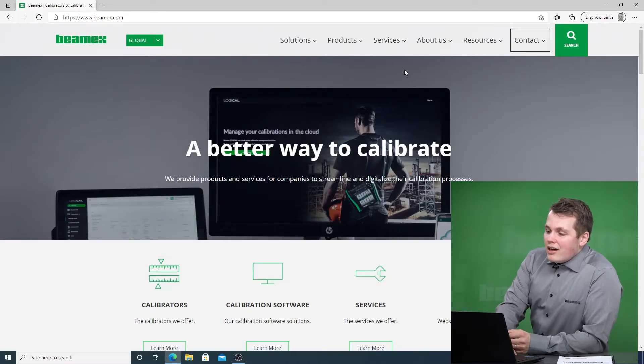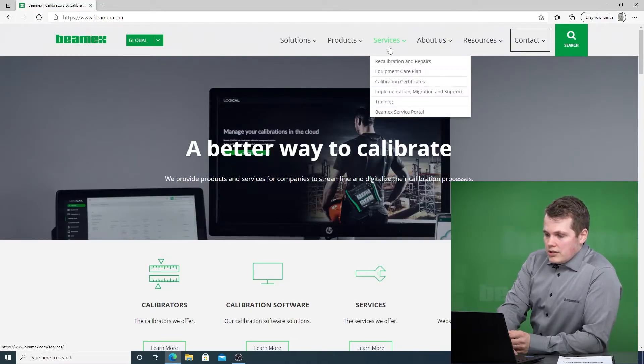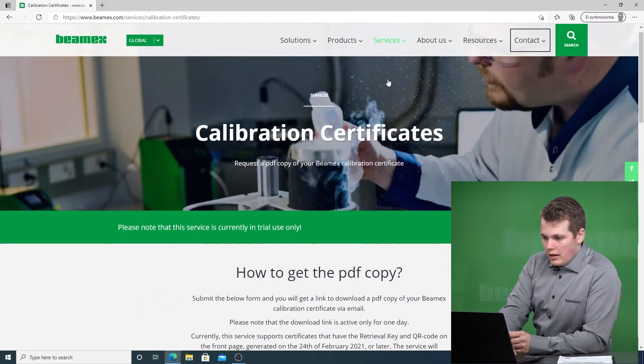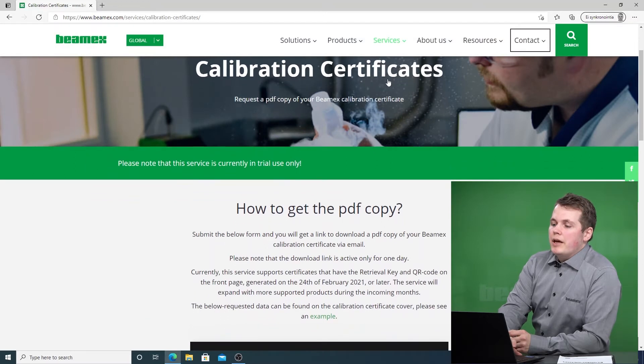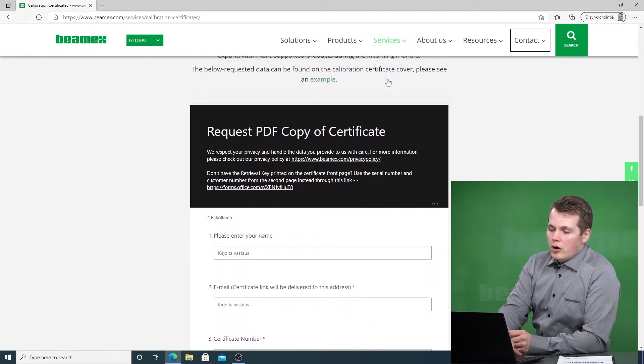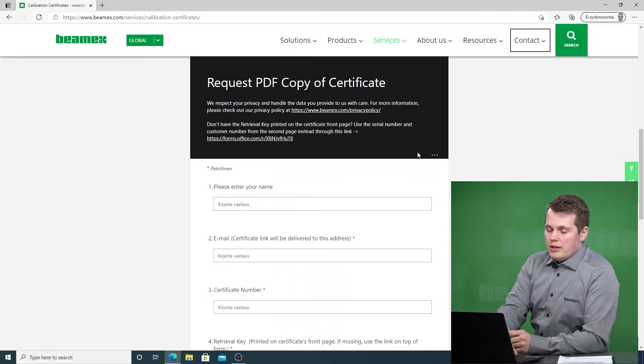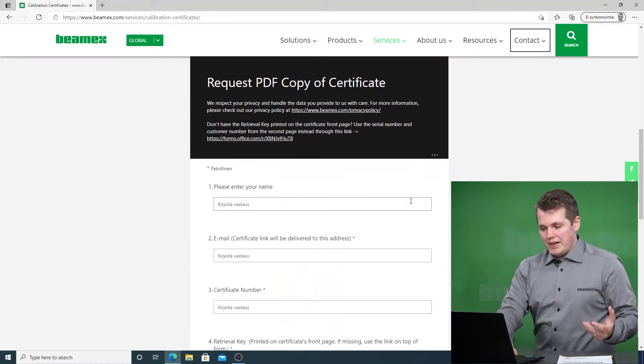So I'm gonna go to the Beamex website which I conveniently happen to be on and I hover my mouse over to services and click on calibration certificates. In the calibration certificates page, if I scroll down all the way to the bottom there will be a form that says request a PDF copy of certificate.